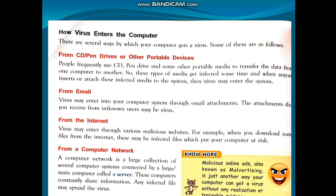Now, you see how virus enters into the computer. There are several ways by which your computer gets a virus. Some of them are as follows. First, from CD, pen drive, or other portable devices. Whenever you are using a CD, pen drive, or other devices, the computer virus may enter into our computer. Some portable media used to transfer data from one computer to another can get infected. When anyone inserts or attaches these infected media to the system, then virus may enter into our system.